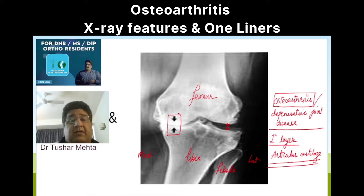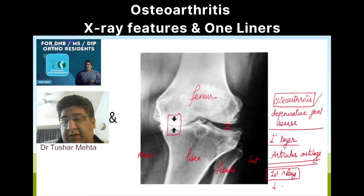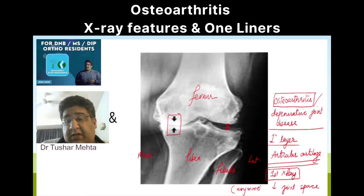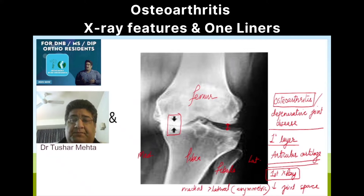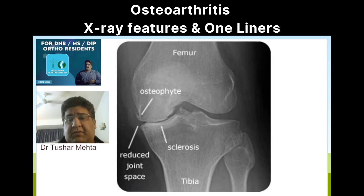We have to look at certain obvious radiological signs. The first X-ray sign, as you can clearly see, is reduction in the joint space. This reduction is an asymmetric reduction, where medial narrowing occurs earlier and more compared to lateral narrowing, which we can all see here.